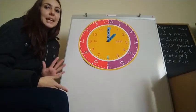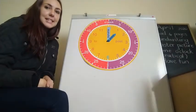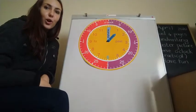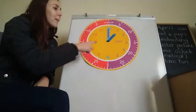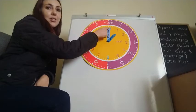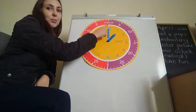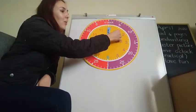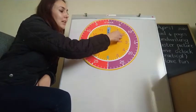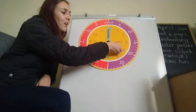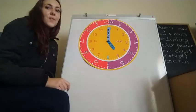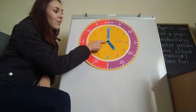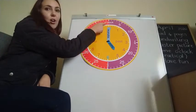If I say that the time is 5 o'clock, my minute hand will be at the 12 because it's zero minutes and my hour hand will be at the 5. The time now says 5 o'clock.